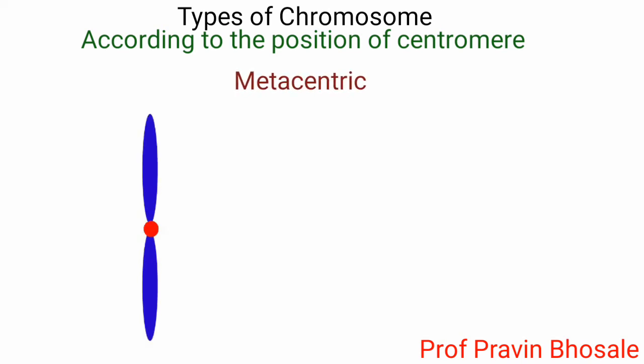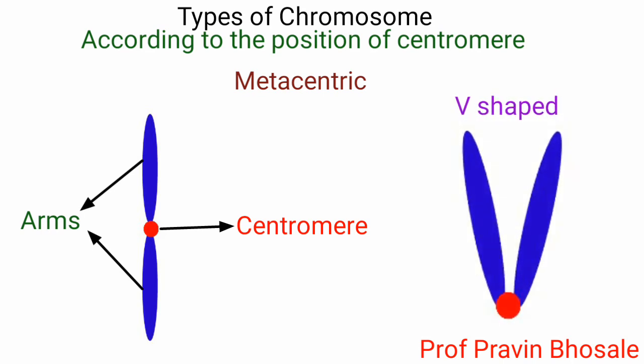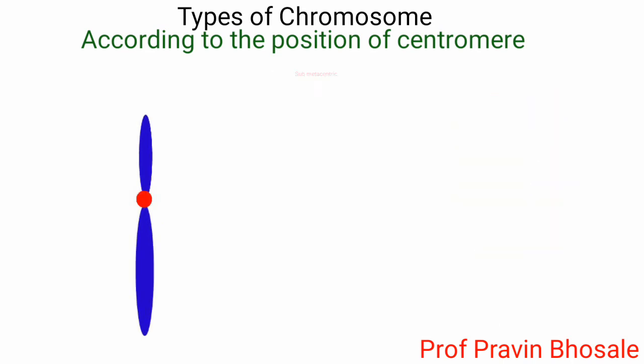Metacentric: if the centromere is situated in the middle of the chromosome, it is a metacentric chromosome. The two arms of the chromosome are nearly equal. It appears V-shape during anaphase.